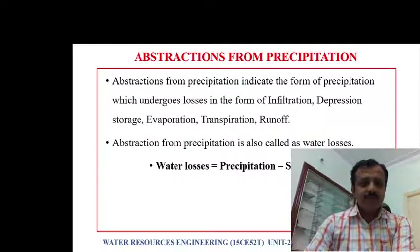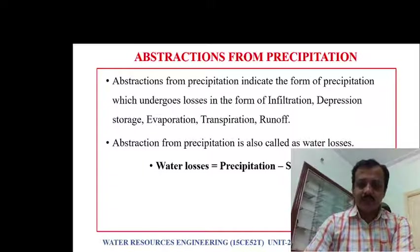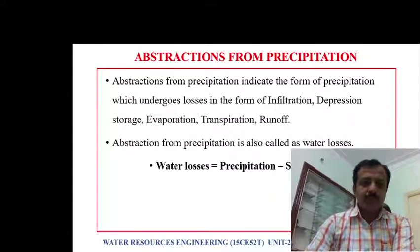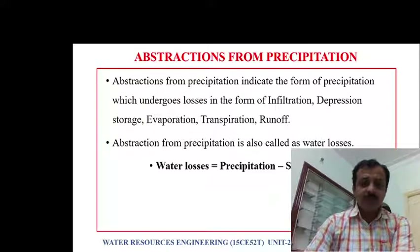We also discussed on abstractions from precipitation. Some of the abstractions from precipitation are also called water losses. These water losses are infiltration, depression storage, evaporation, transpiration, evapotranspiration, etc. Water losses is equal to precipitation minus runoff. Whatever precipitation occurs, if we subtract surface runoff, we get water losses.